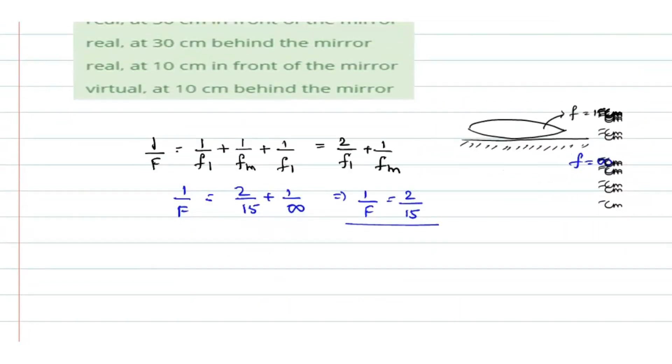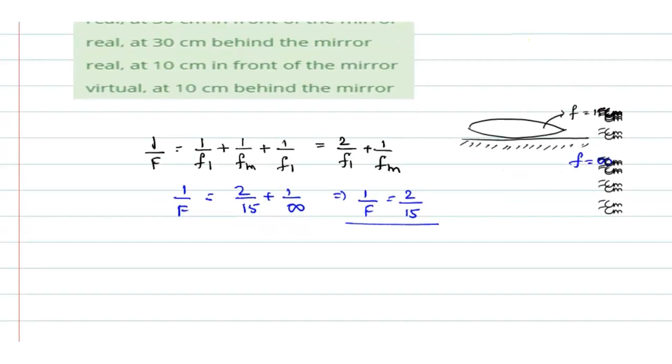Now we have to find the image. Image distance you need to find. To find that image distance, we use the lens equation. Lens equation is 1 by v minus 1 by u is 1 by f.